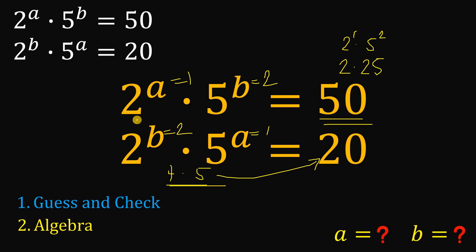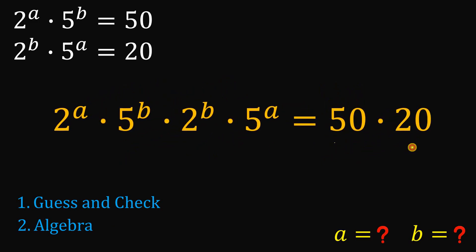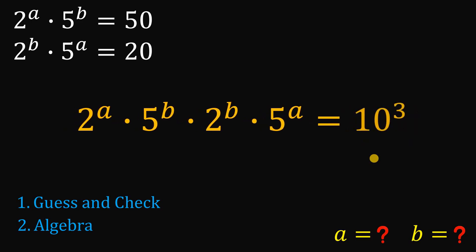But what if those numbers are too big? We can now use the algebra approach. To answer this using algebra, we first multiply the two equations together. We get 50 times 20, which is 1,000, and 1,000 we can write as 10 raised to the power of 3.